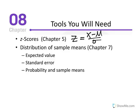We'll also need a good understanding of the distribution of sample means from Chapter 7. Its characteristics include the expected value — the mean of all sample means always equals the population mean. The standard error is calculated as the population standard deviation divided by the square root of n, and it represents the average difference between a sample mean and the population mean, also referred to as the expected difference between m and mu.